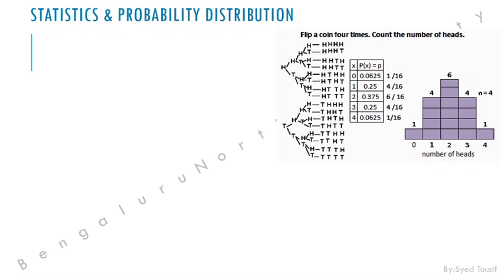If you are tossing a coin 10 times, there are 1024 different patterns. If 20 times, even more. Writing out all patterns and counting would take a very long time. For such complex problems, we use distributions — binomial distribution, Poisson distribution, normal distribution, and others. We'll discuss the distributions needed for your academics.